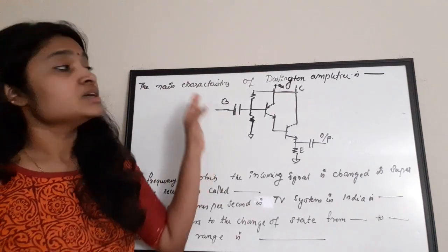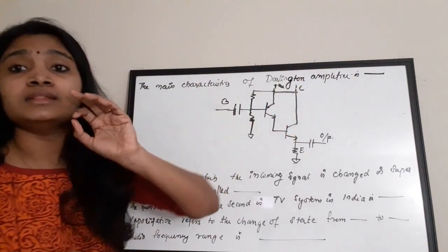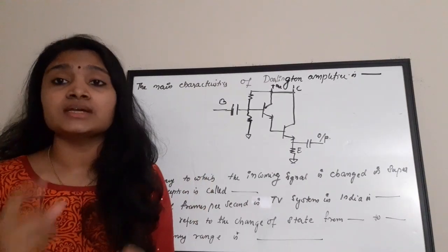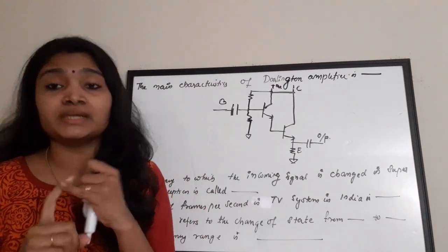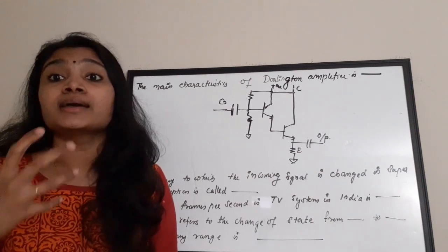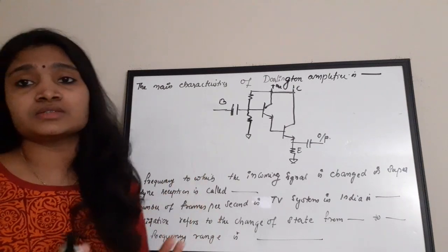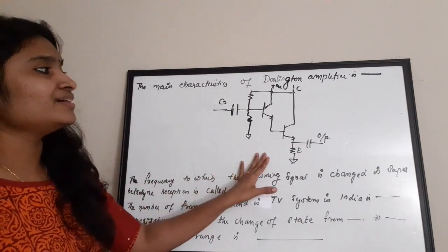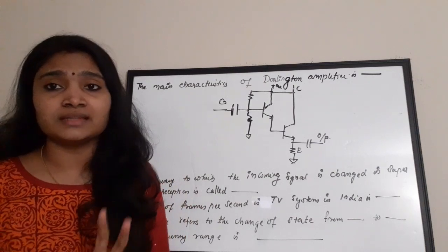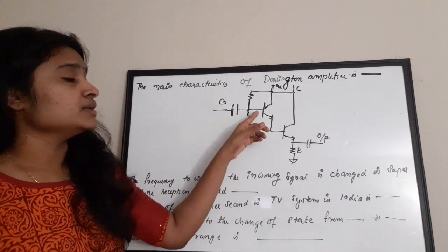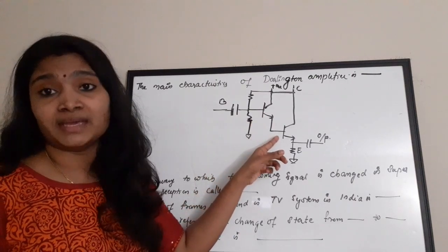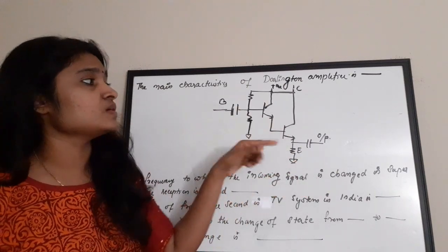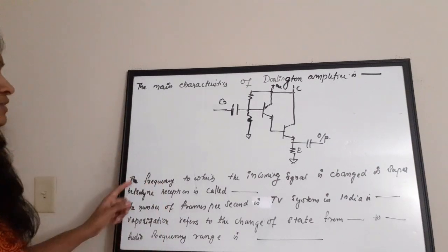The main characteristics of a Darlington amplifier are: very high input impedance, very low output impedance, and very high current gain. A Darlington pair is formed by connecting two BJTs together — the emitter of the first BJT is connected to the base of the second, input applied to the first BJT's base, output taken from the emitter of the second BJT.